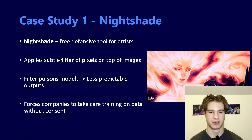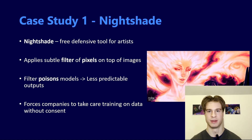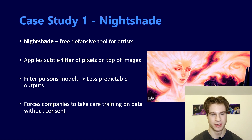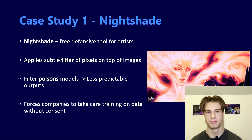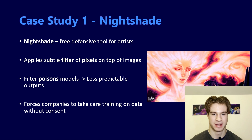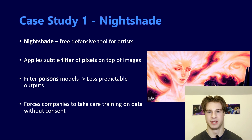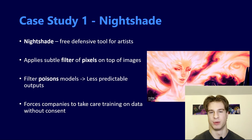Now let's look at case study number one: a tool called Nightshade. This is a free defensive tool that artists can use to protect their online art against being used as training data. What Nightshade does is supply a subtle filter of pixels on top of images, completely invisible to the human eye. However, to an AI model, it will pick up on these pixels and generate unpredictable outputs if trained on too many of these samples. This forces companies to take care when training on data without consent, because if they do so recklessly their model will be unusable.